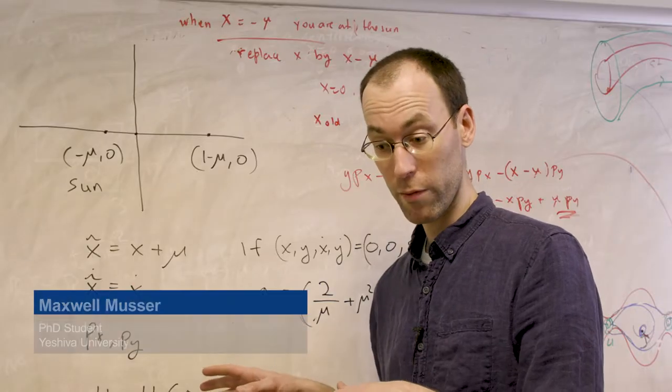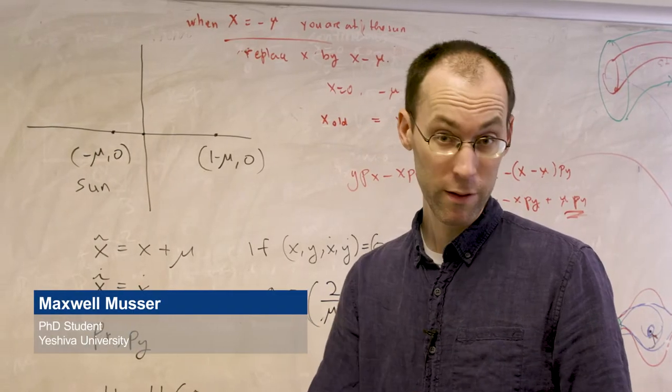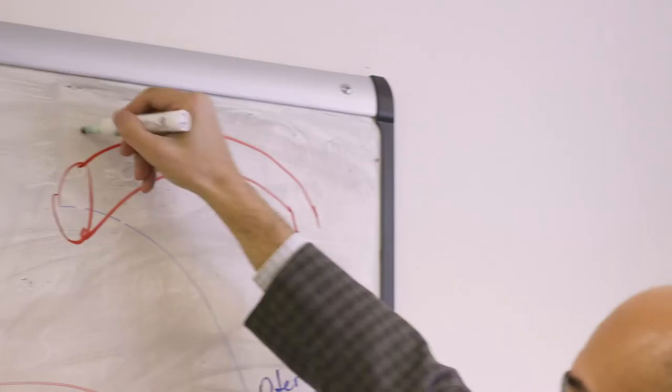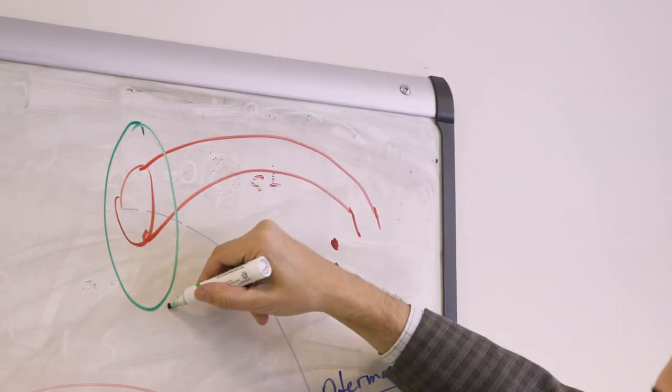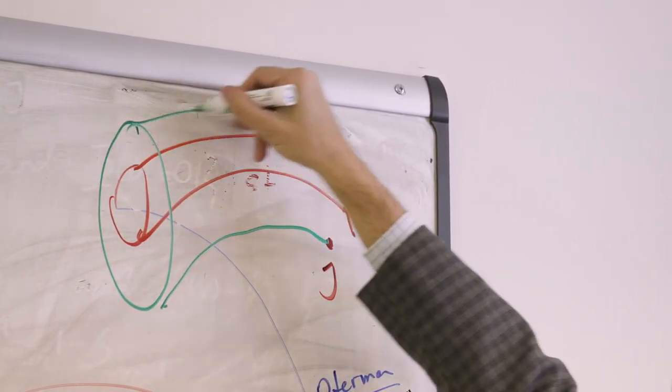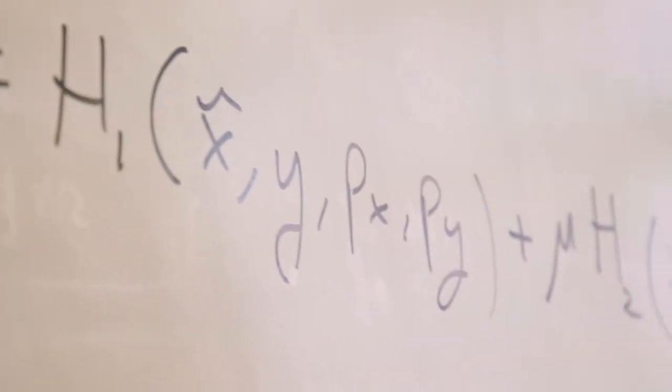This particular three-body problem is the Sun, Jupiter, and a comet that has been observed near both the Sun and Jupiter called Oterima. We want to know how Oterima moves under the influence of gravity.